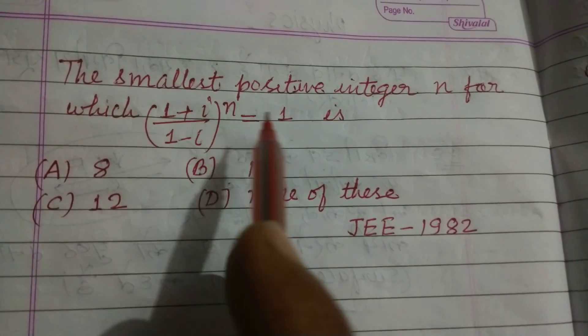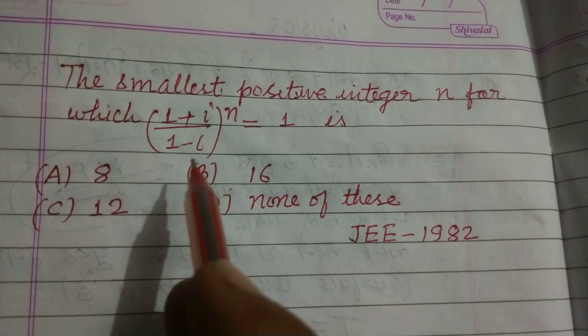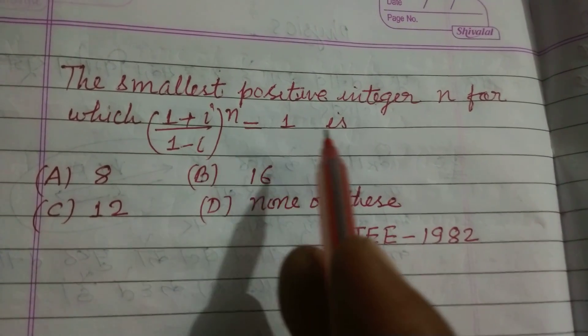Hello student, the smallest positive integer n for which (1+iota)/(1-iota) to the power n equal to 1 is?